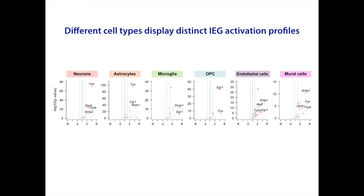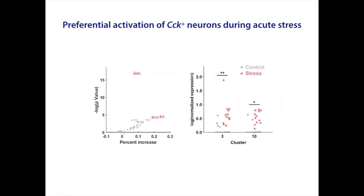Seizure is a very strong stimulus, but most of the behaviors that we are interested in elicit neuronal activations on a smaller scale. Would our method be sensitive enough to detect such changes? To test this, we applied X-Seq to detecting neuronal activation following acute stress. We found that out of the 16 neuronal subtypes, acute stress preferentially activated two subtypes, both of which expressed the neuropeptide gene CCK.